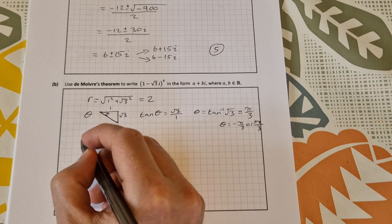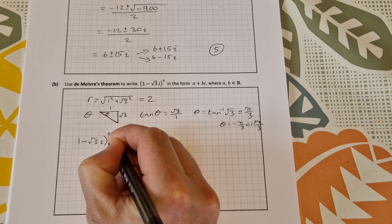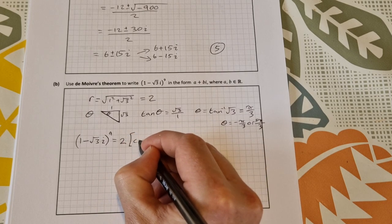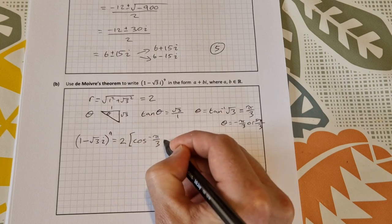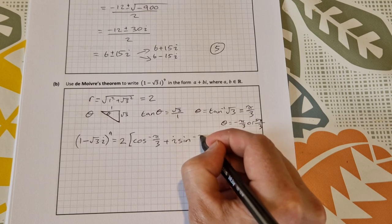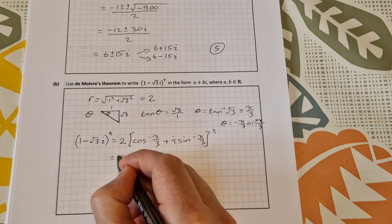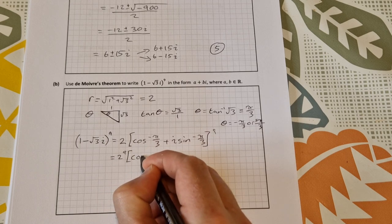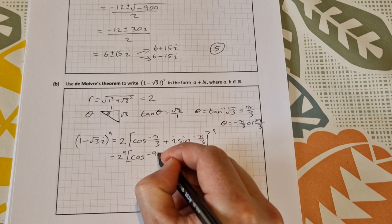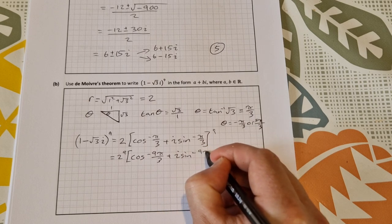So then, we want to apply De Moivre's theorem. So 1 minus root 3 i to the power of 9 is going to be equal to 2, so that's our r, times cos theta, so that's cos of minus pi over 3, plus i sine of theta, so that's minus pi over 3. And that's to the power of 9. So then, working through, that is 2 to the power of 9, times cos of minus 9 pi over 3, plus i sine of minus 9 pi over 3.